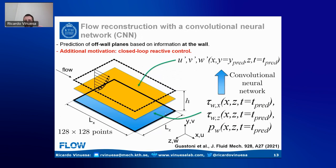We will use the information at the blue plane — which is the wall, specifically the two wall shear stress components and the wall pressure — to predict the velocity fluctuations on the yellow plane above the wall. Basically the three velocity fluctuation components based on wall information using computer vision tools such as convolutional neural networks.